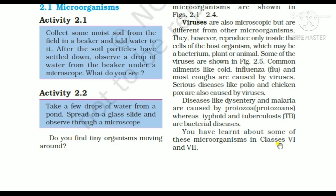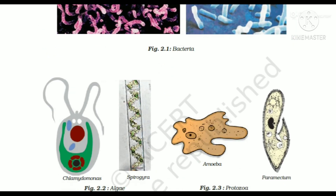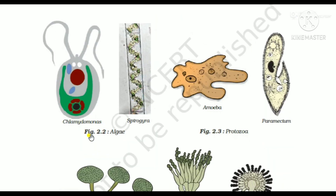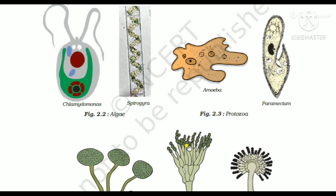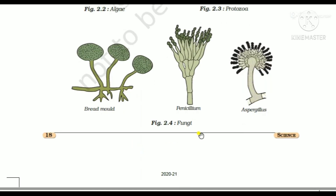We have learned about some of these microorganisms in class 6 and 7. Here, an image of bacteria is given — observe how its formation looks. Algae structure is also shown. After that, protozoa is shown: Amoeba, Paramecium — protozoa like Amoeba are single-cellular, also called unicellular. The structure of bread mold and Penicillium is also shown here.